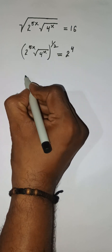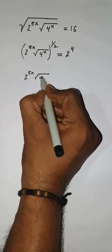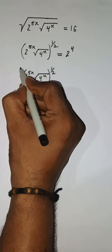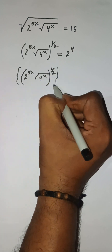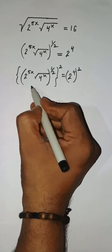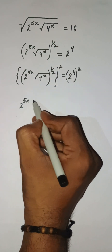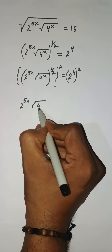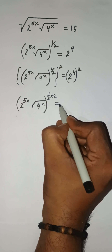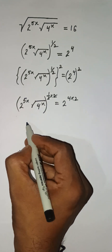To remove the square root, I'm putting a square on both sides. So here we have 2 to the power 5x, root under 4 to the power x with power 1 by 2, squared on both sides. The square and 1 by 2 cancel. On the right side, 2 to the power 4 squared gives 2 to the power 8, and the 2s cancel.